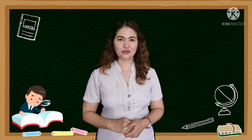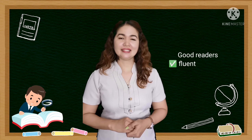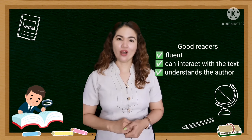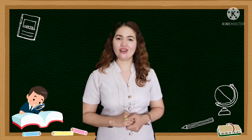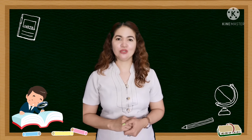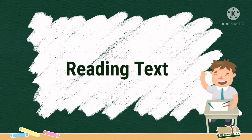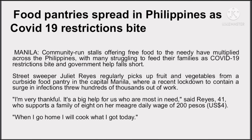But what makes a good reader? Good readers are fluent and can interact with the text and understand what the author wants to communicate. In order for us to recognize the author's opinion in the text, we must be able to investigate the information presented to us. This time around, we will be reading a text connected to the picture we saw a while ago. Let us look for areas of viewpoints from the author, which is exemplified in the text.